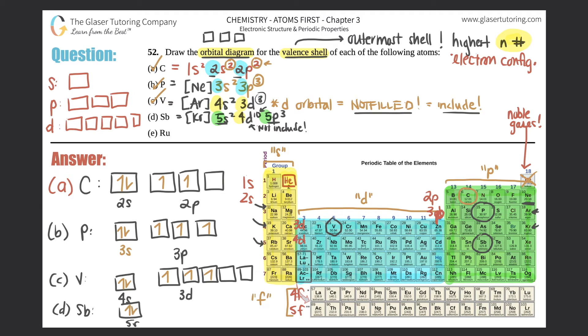So for Sb, we have one box for 5s and it's filled so one, two. And then you have a p, so three boxes, that's a 5p, and then three electrons one, two, three and that's done.